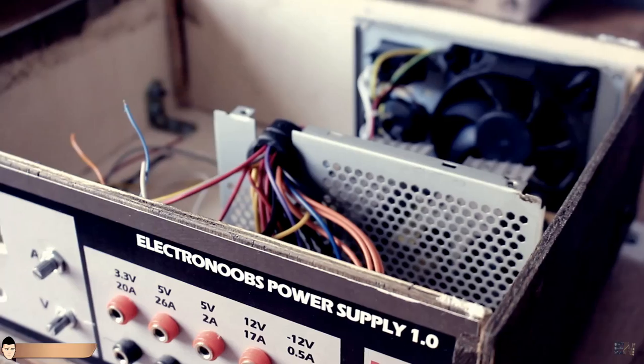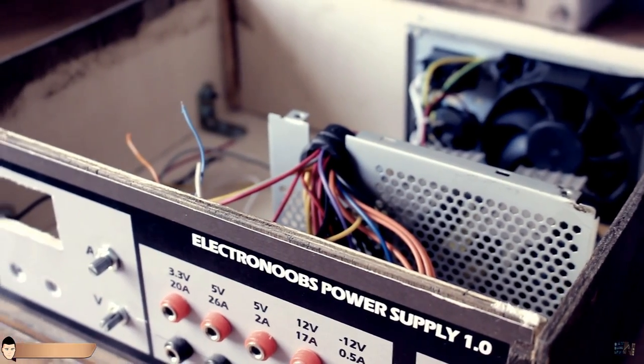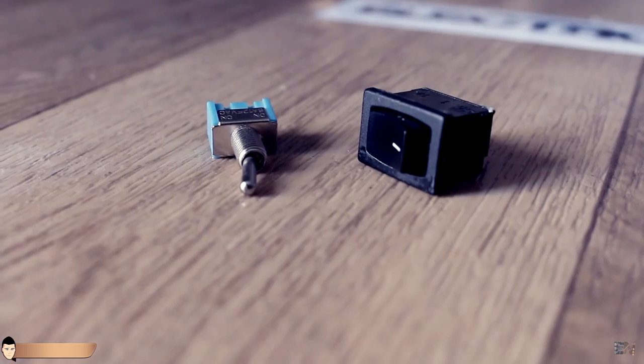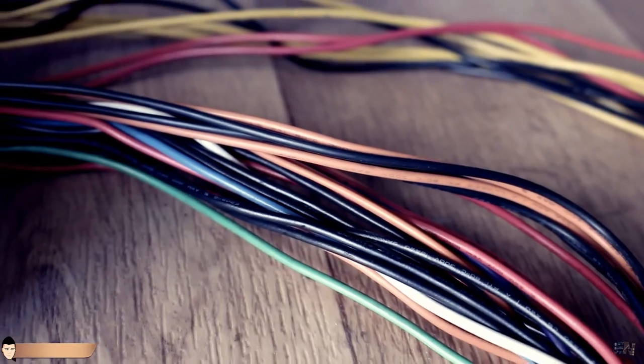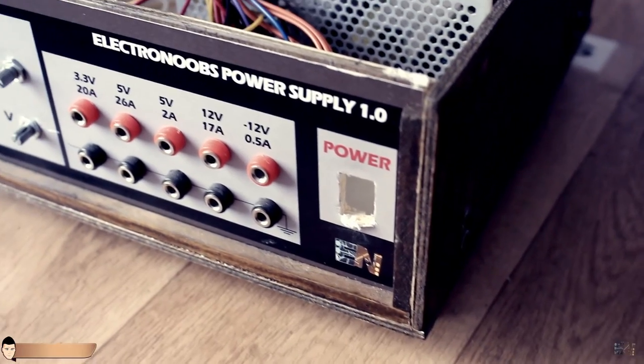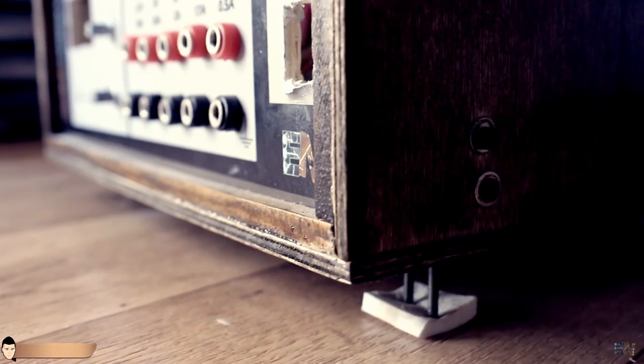Finally, we would need a case for the power supply, some banana connectors, two potentiometers, switches and wires. I've built my case out of balsa wood. You have the dimensions in the link below if you want to build the same. Then I've painted it with some nice vintage varnish.